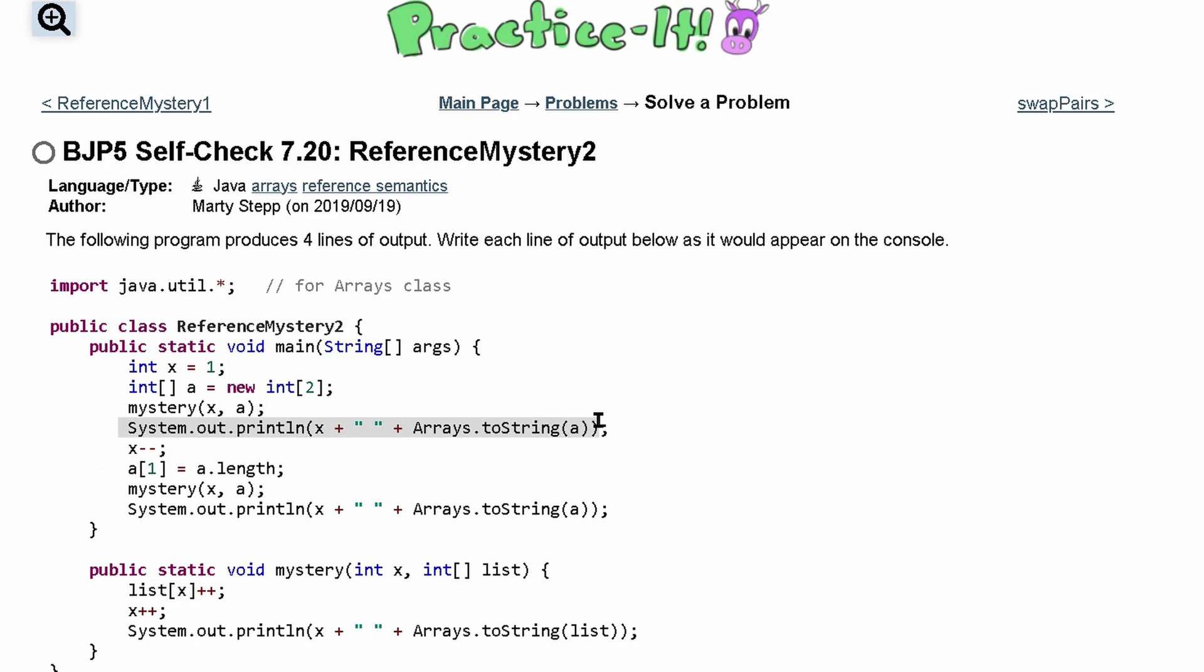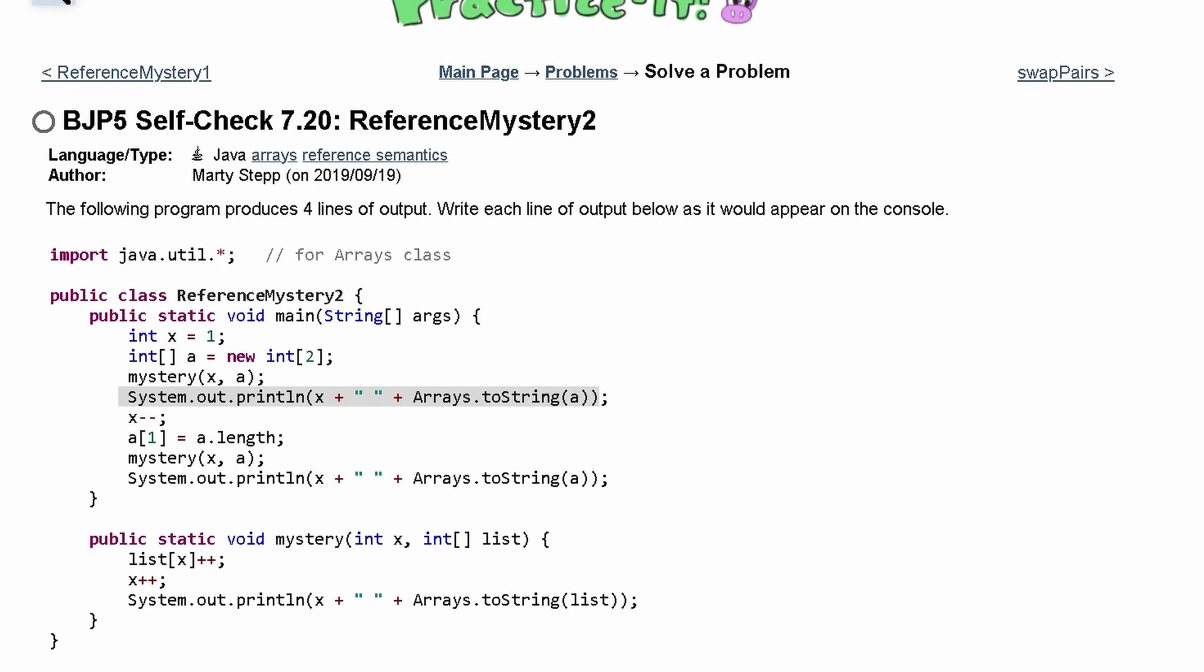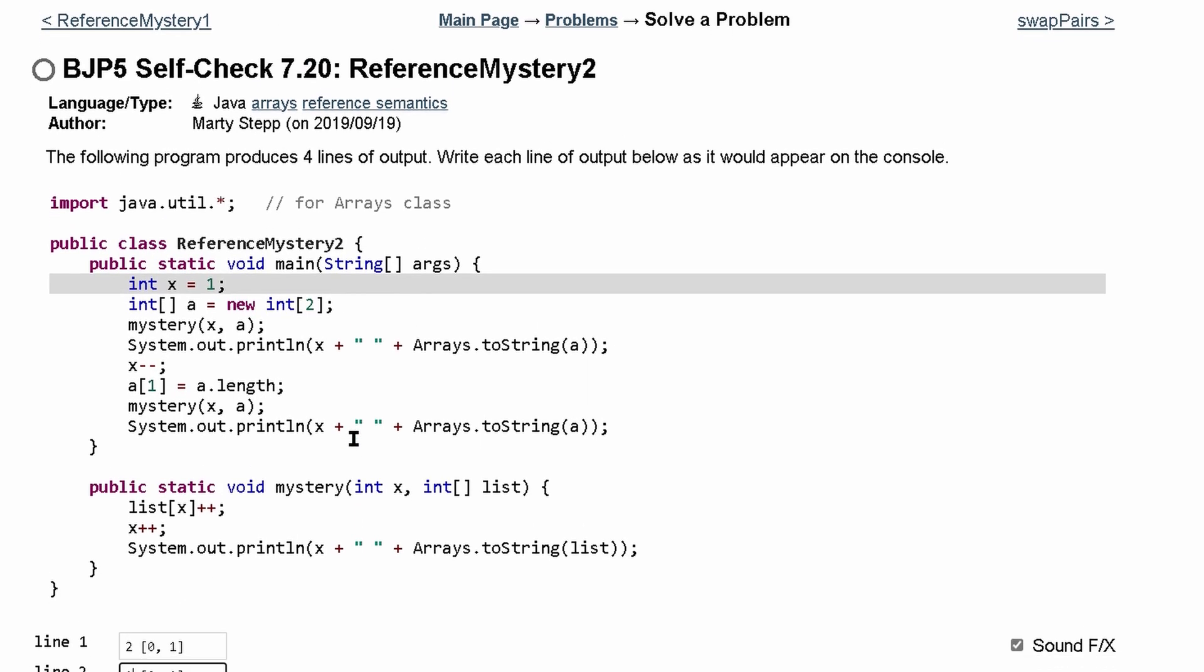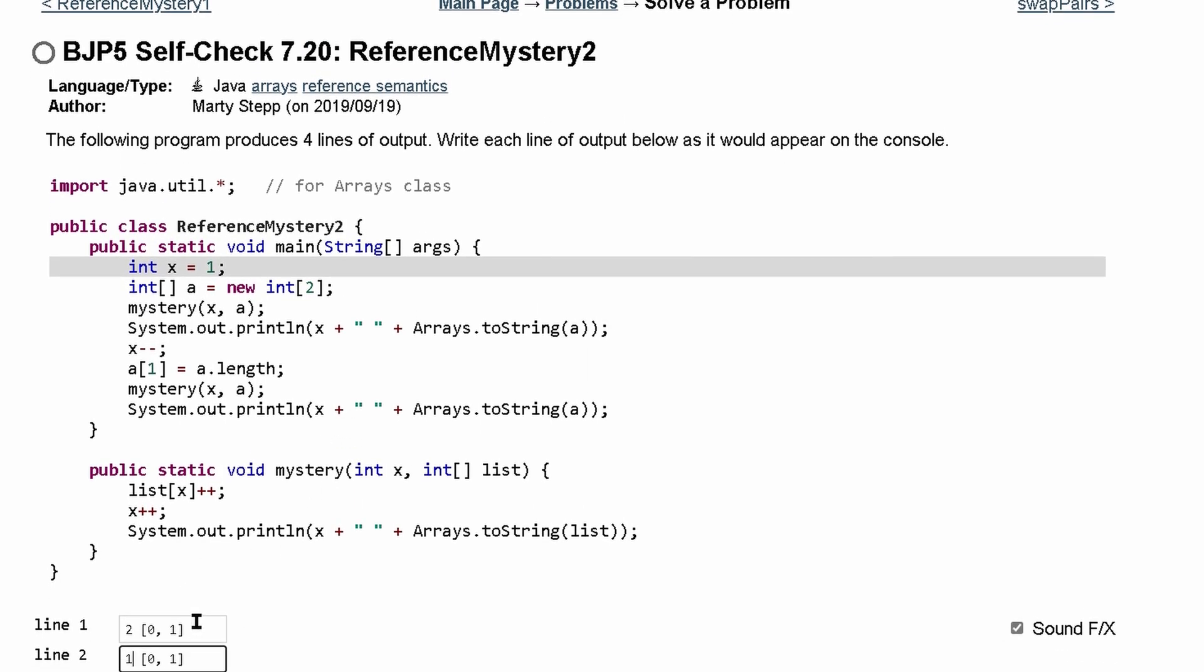Now we're going to come out of here and go into the System.out.println. First off is our x here. Now our x, we just incremented in here. So we still have x equals 1 on the outside. So we should just have 1 right here. And our array doesn't change, so that should be the same.